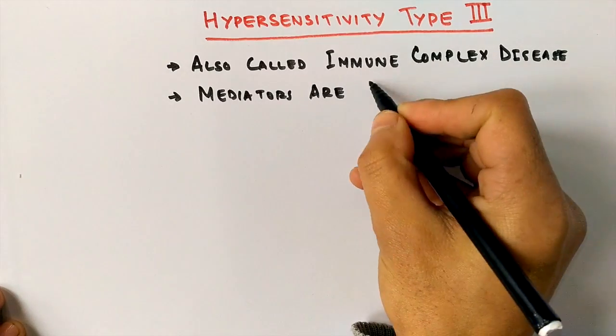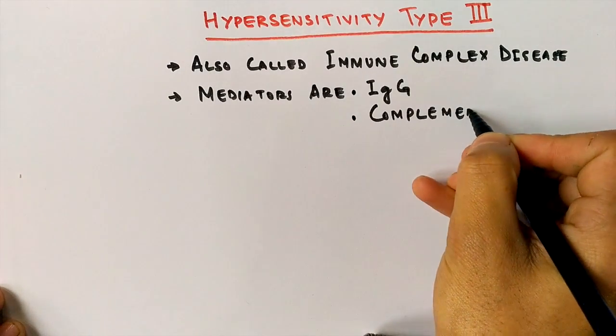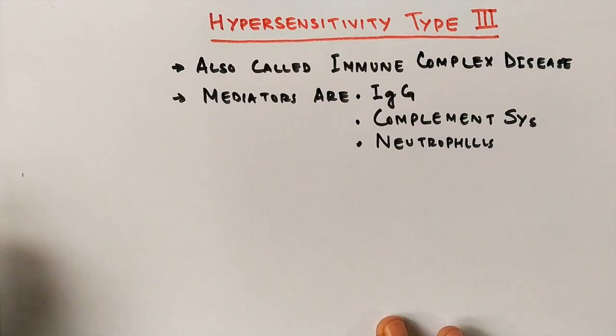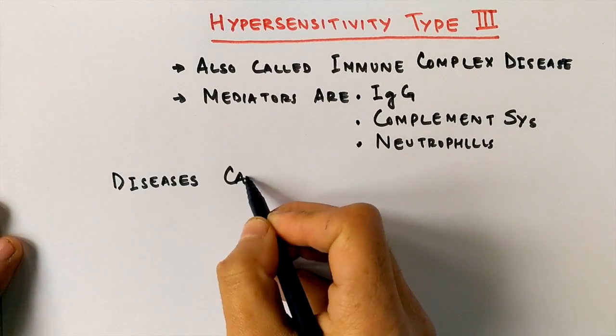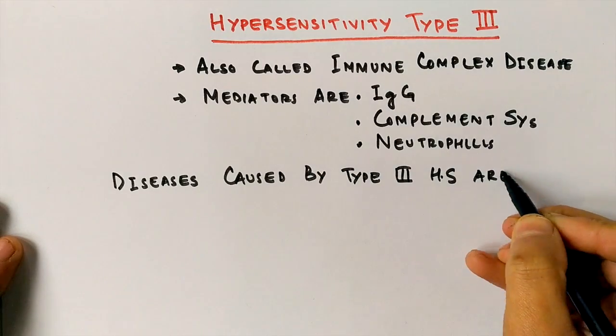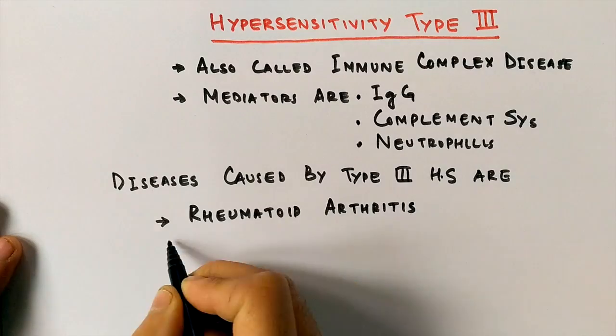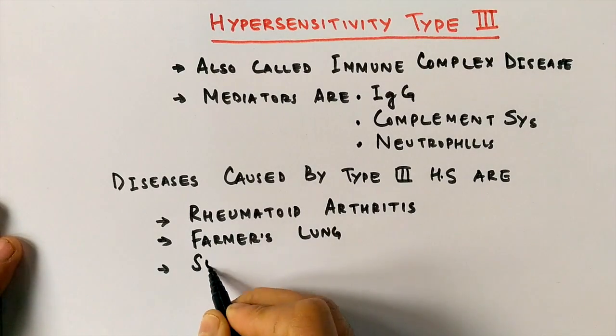Its mediators from the immune system are IgG (antibody G or immunoglobulin G), complement system, and neutrophils. Few diseases that are listed below are caused by this hypersensitivity, which are rheumatoid arthritis, farmer's lung, serum sickness, and there are others also.